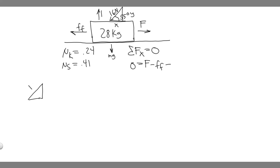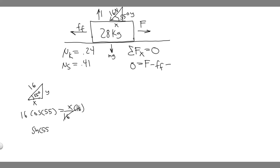To find the x component, we use cosine: cosine of 55 degrees equals adjacent over hypotenuse, which gives x over 16. Solving for x: x equals 16 times cosine of 55. For the y component, we use sine: sine of 55 degrees equals opposite over hypotenuse, which gives y over 16. Multiplying both sides by 16 gives the y component. Now we have both components. For the x direction equation: F minus the force of friction minus 16 times cosine of 55 equals zero, so F equals force of friction plus 16 times cosine of 55.